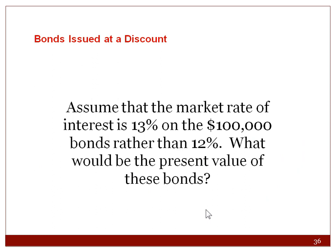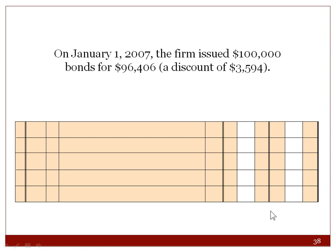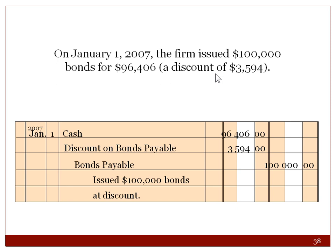Now assume the market rate is 13% instead of 12% on the $100,000 bonds. The market rate is greater than the contract rate, so we use the market rate to find present value. The present value of the bonds is now less than the face amount — the bonds are sold at a discount. The journal entry: debit Cash $96,406, debit Discount on Bonds Payable, and credit Bonds Payable. When the market rate is greater than the contract rate, the bonds are sold at a discount.